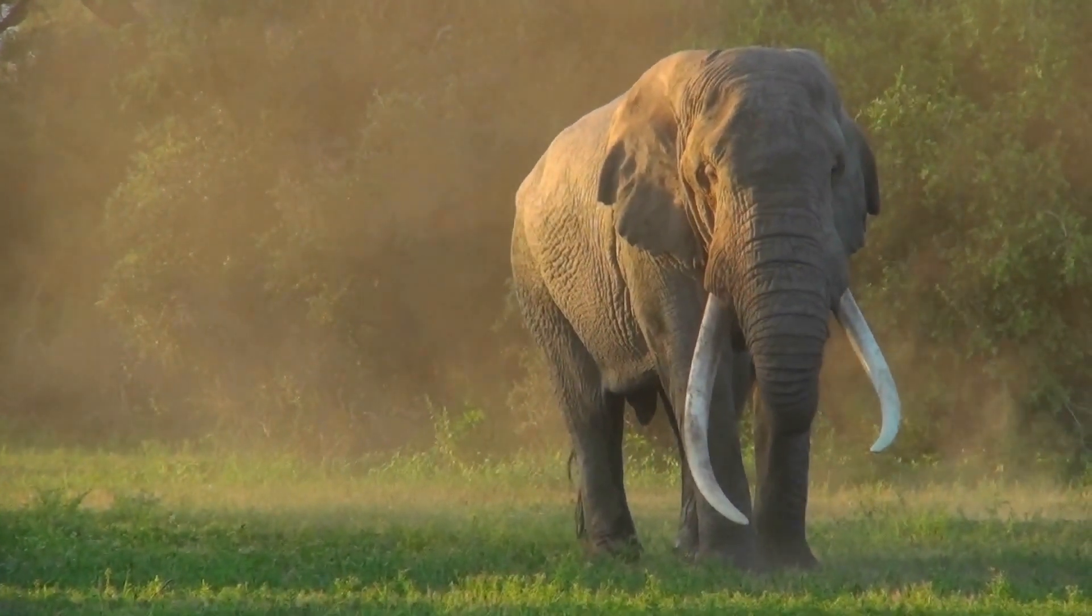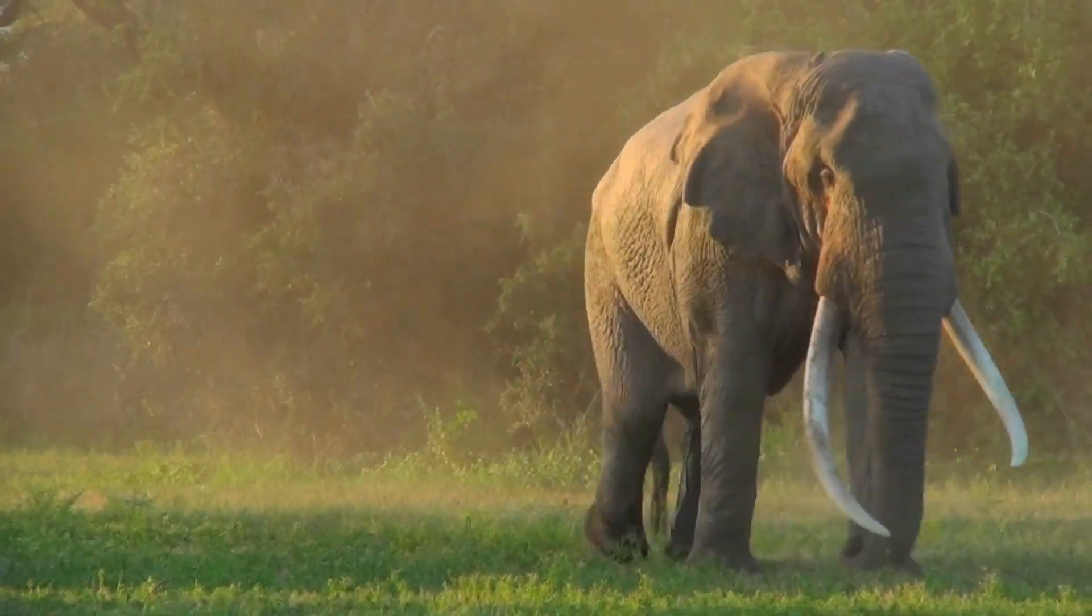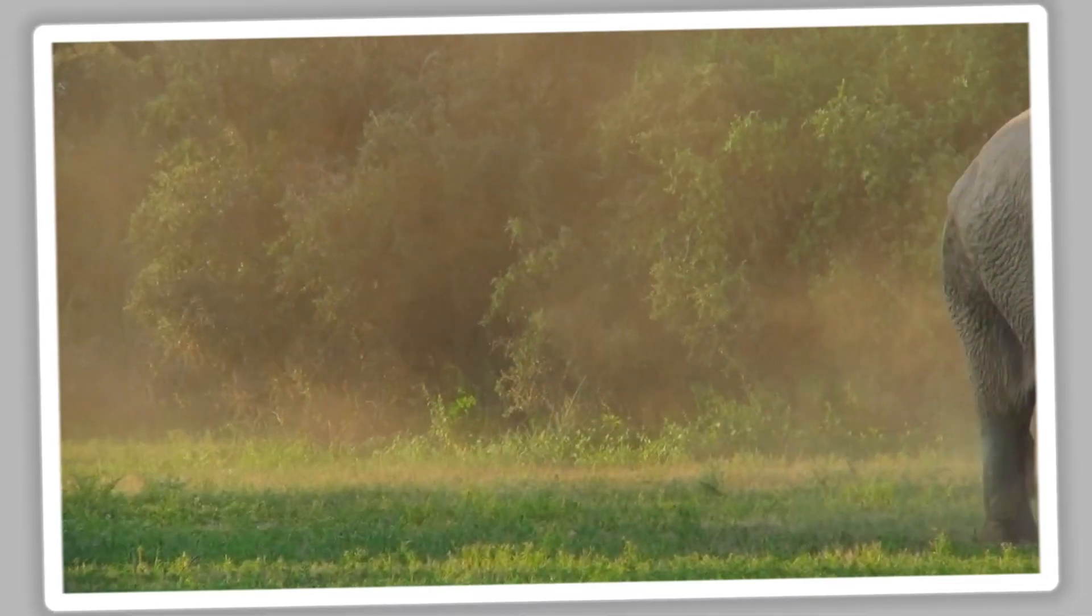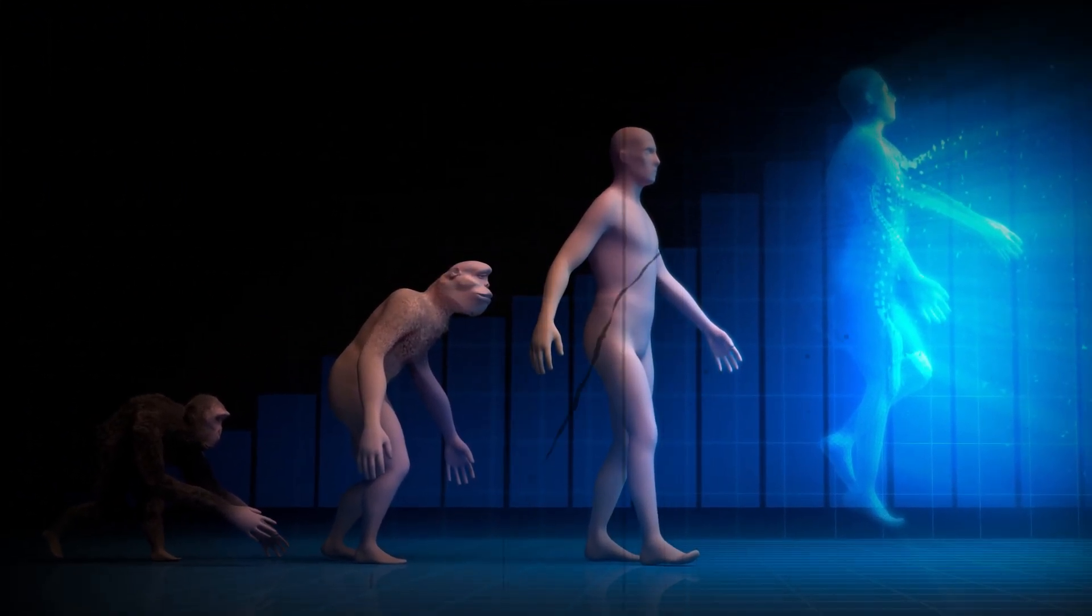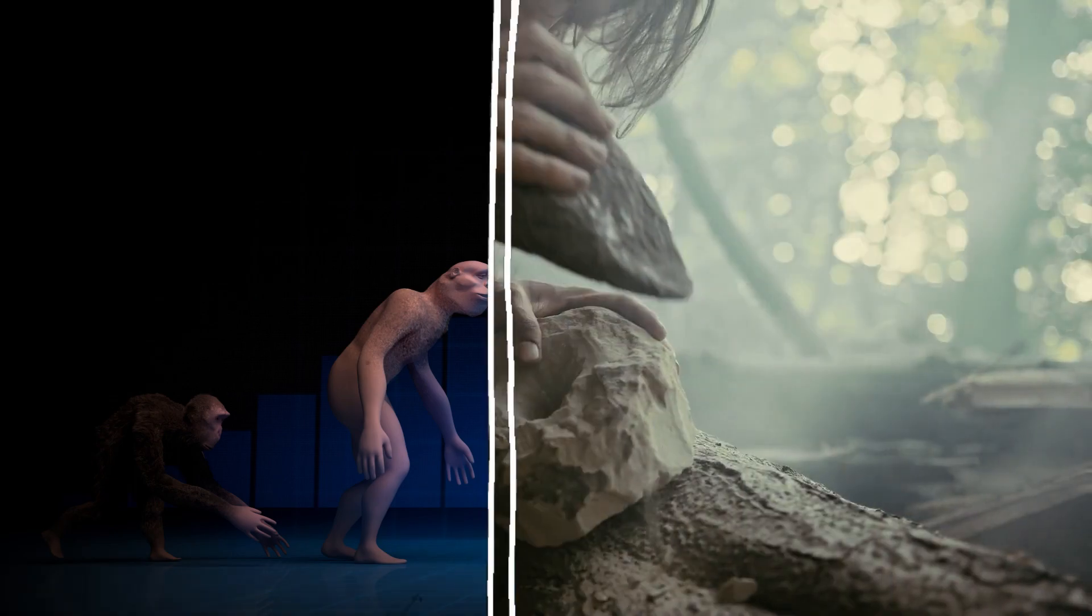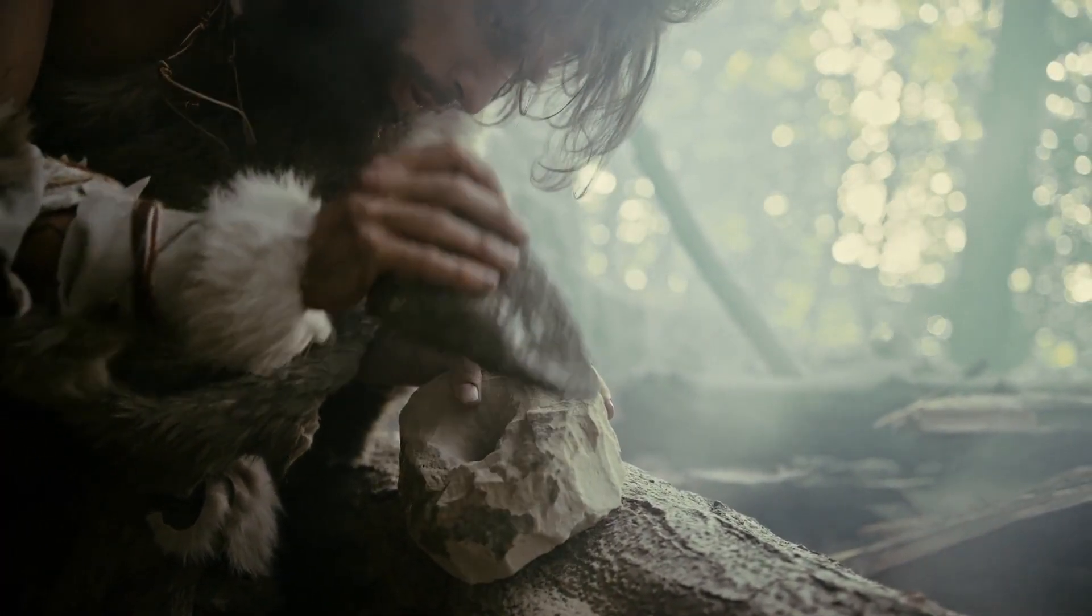The first known people walked the Earth about 6 million years ago. This species was known as Sahelanthropus, even if they did walk on all fours. Early humans began walking upright 4 million years ago. And around 1 million years later, they'd create the earliest known tools, which they used to break things.